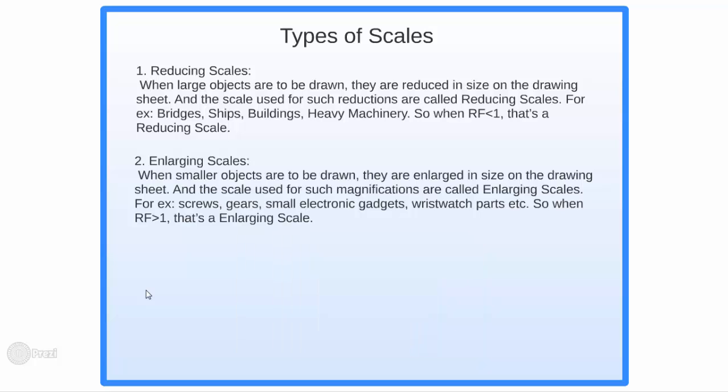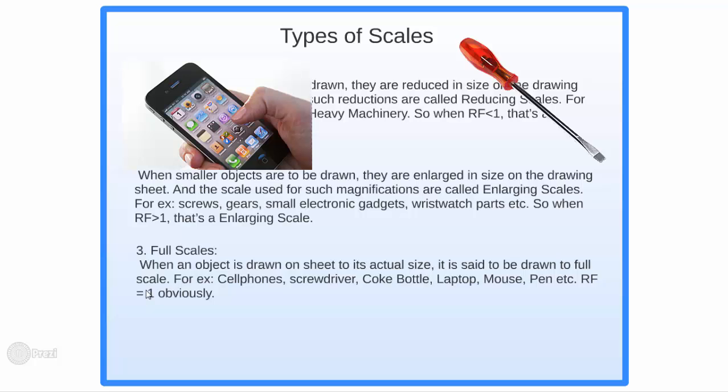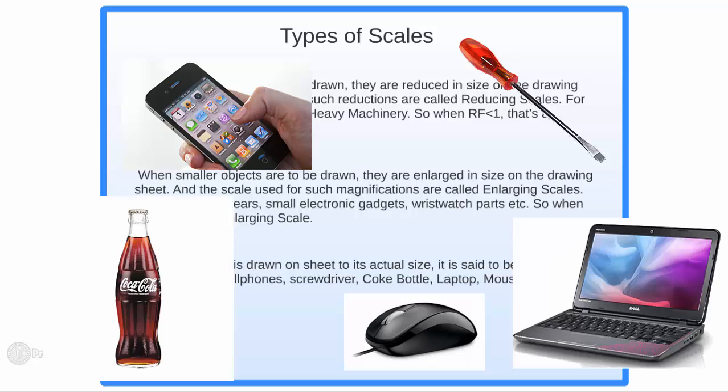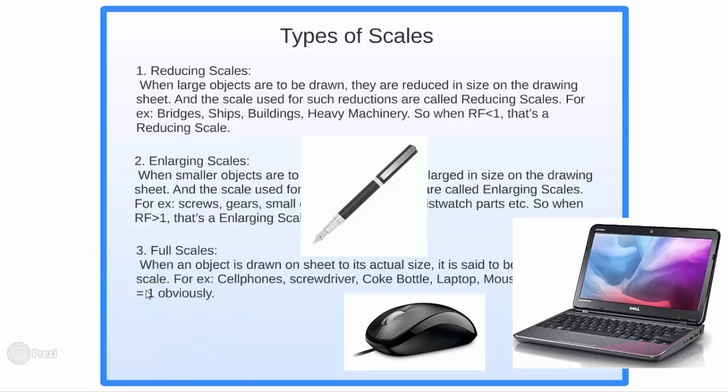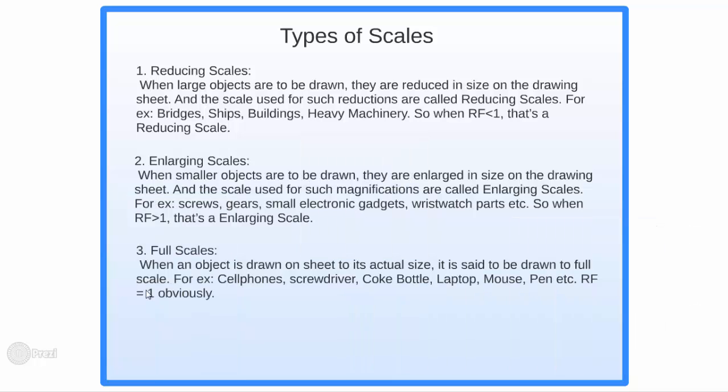Coming to the final type of scale, that's what you call a full scale and here the object is drawn on sheet to its actual size like cell phones, screwdriver, coke bottle, laptop, mouse, pen, all of these are examples of full scale. RF is equal to 1 obviously as the drawing length is equal to the actual length.